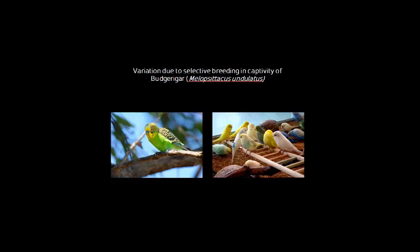Another Australian example is the budgerigar. On the left-hand side, the green version is the wild type — it exists in the wild in Australia. However, due to selective breeding in captivity, there's been a vast array of colours developed: canary yellows, whites, blues, pied patterns with variations in colour, all the way to pink and red. They even have feather variations where the feathers cover their eye and are long and whispery.